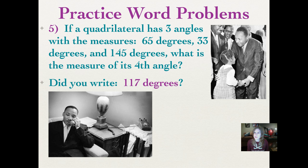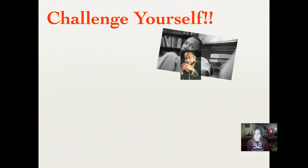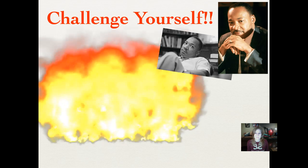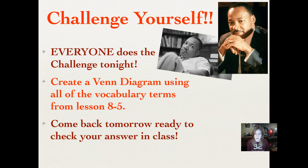It's time to challenge yourself. Don't stop the DVD because you need to challenge yourself - all of you need to do this. Everyone does the challenge tonight. You're going to create a Venn diagram using all of the vocabulary terms that you used in your hierarchy diagram. The difference is a hierarchy diagram looks more like a family tree with lines drawn pointing to the different shapes that go underneath it. A Venn diagram is where you use circles - you may have overlapping circles and surrounding circles. That's all I'm going to tell you. See if you can figure out how to organize all of that in a Venn diagram, then come back tomorrow and we'll go over it in class.